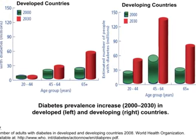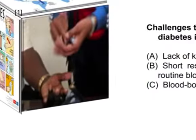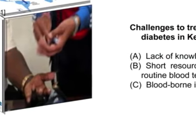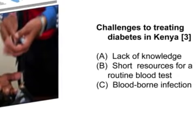The majority of patients are children and adults aged 45 to 64. It's an extreme challenge to manage diabetes in Kenya. Blood-borne infection is a problem in Africa.